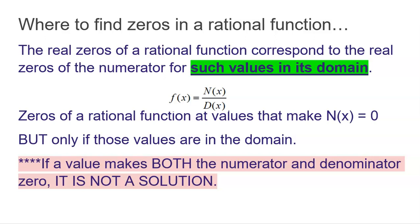If a value makes both the numerator and the denominator zero, it is not a solution. Because if you make the denominator zero — as covered in the domain of rational functions video — you are not in the domain. Therefore, it cannot also be a solution. When this scenario happens, that's something for a later video.